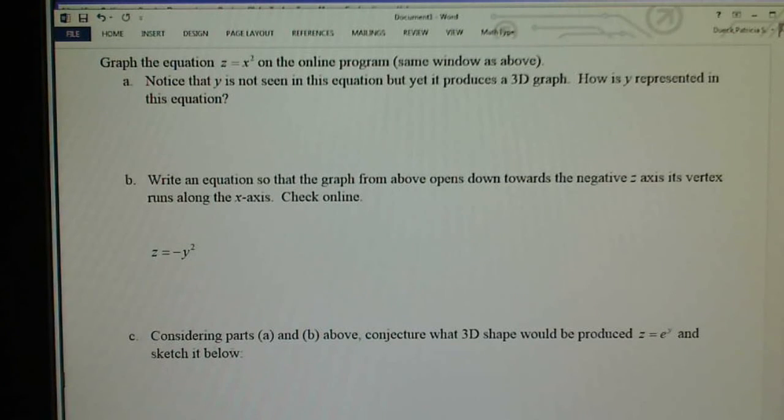The last question says considering parts a and b above, conjecture what 3D shape would be produced if z equals e to the y and sketch it below. So that's something that you can do yourself. I know that you can go and type in z equals e to the y into the thing and sketch it and know immediately.